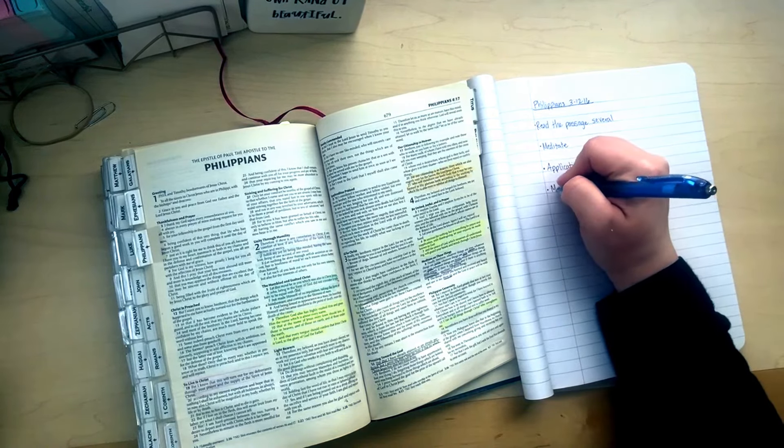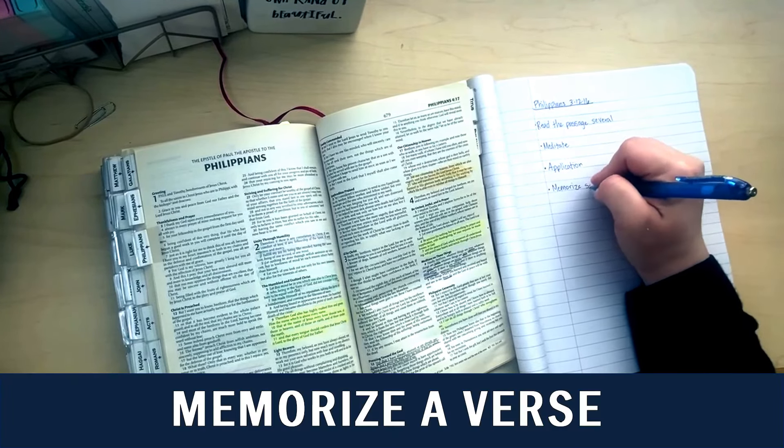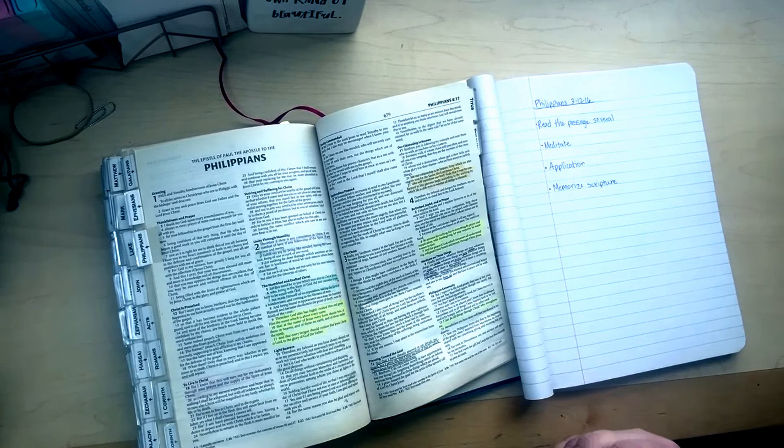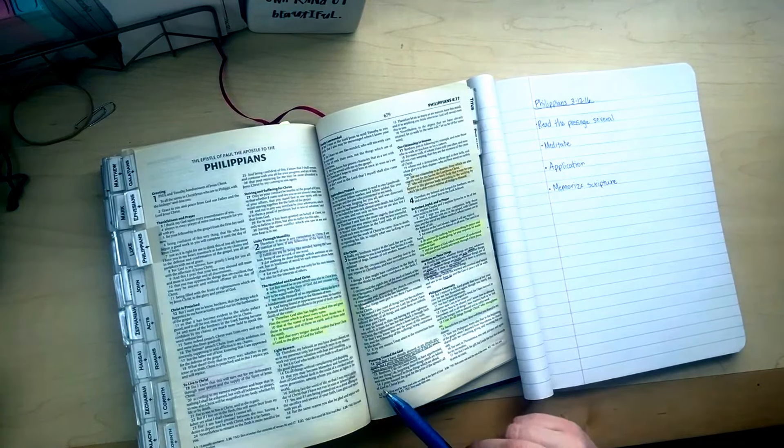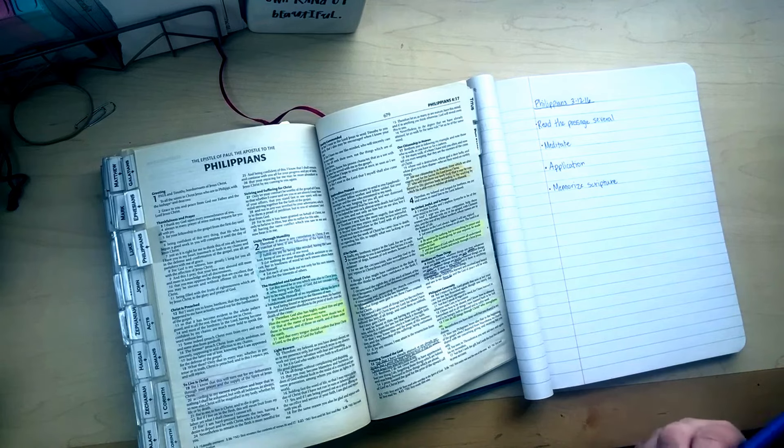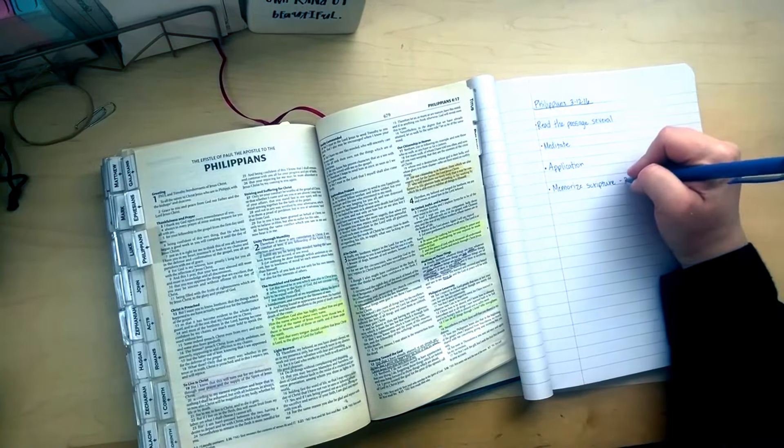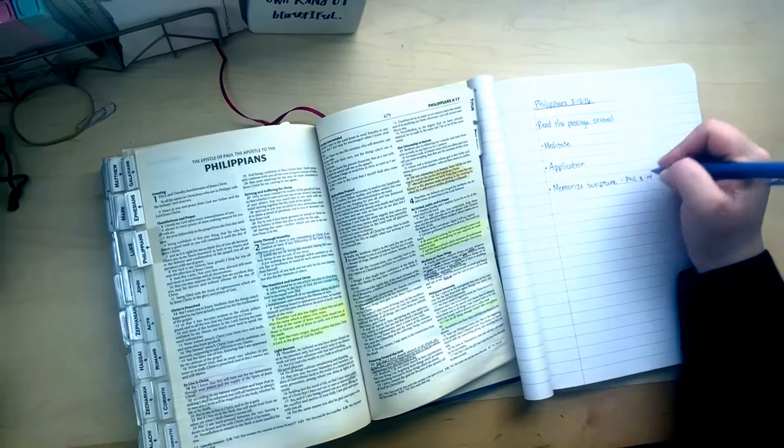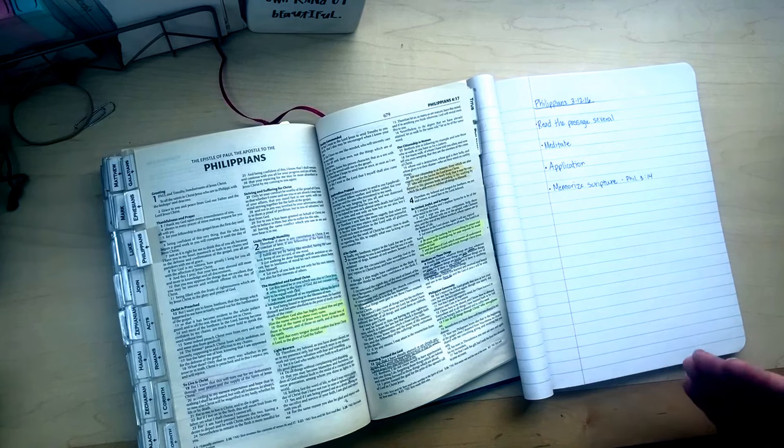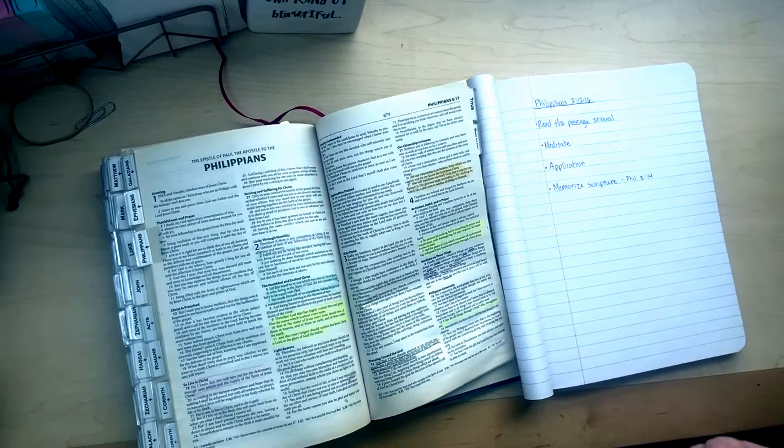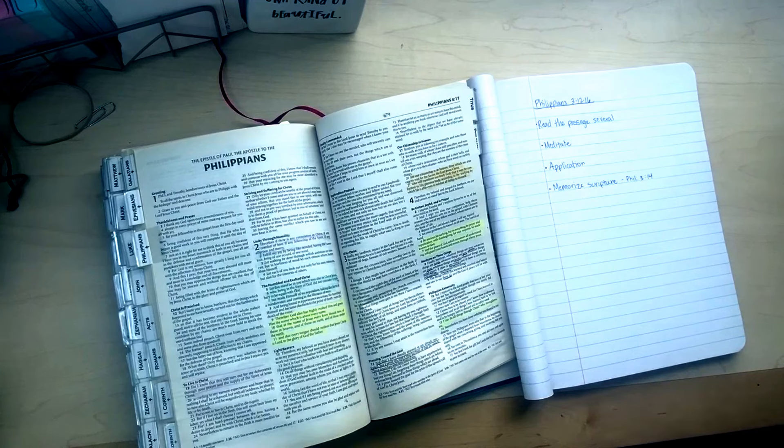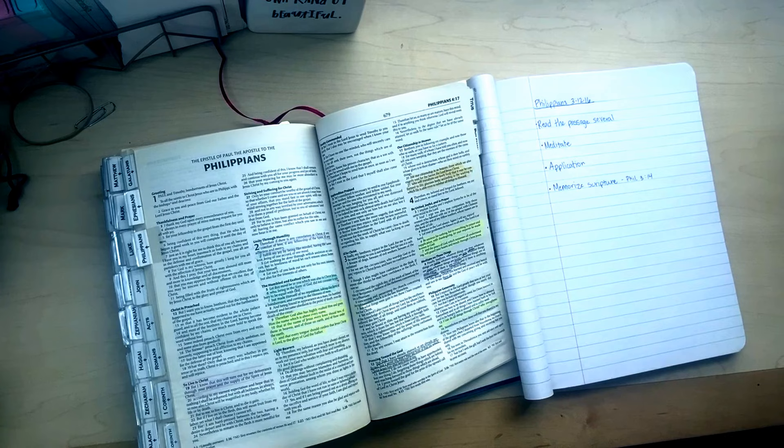Then after that, you may consider choosing a specific verse in there to memorize. So maybe there's one that really stood out to you or that you really want to focus on. So maybe I would, for example, like verse 14 says: I pressed toward the goal for the prize of the upward call of God in Christ Jesus. So maybe that's the one that I want to memorize. So I'm going to put Philippians 3:14 and I would write it out. And you might also write it on a note card, whatever method you use to memorize scripture, that's what you need to do. So write it out. And then that's the scripture that you need to focus on memorizing. And the memorizing is not a requirement of this method. It's just an additional piece of the method that it wouldn't hurt to memorize it.